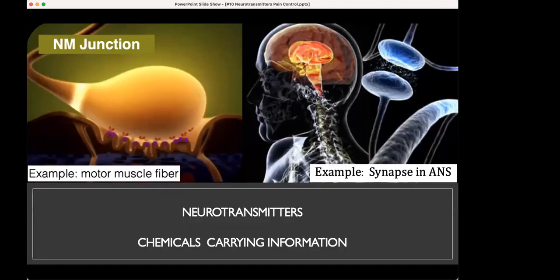The neurotransmitters — a couple of examples. The first is a motor end plate, where the muscle fibers are being stimulated from the neurotransmitters. Then the other is the synapses, which are more in the autonomic nervous system. Those are places where we also block with things like spinals and epidurals.